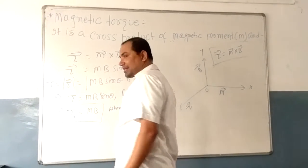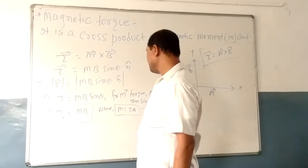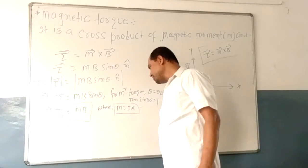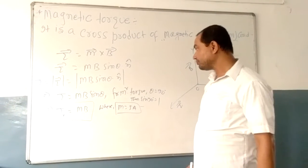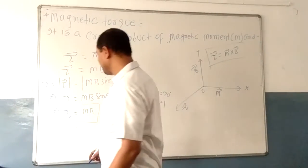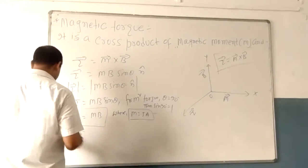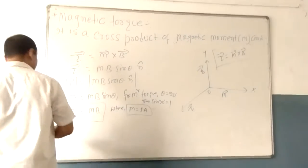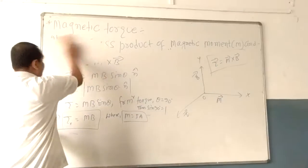Magnetic dipole moment — in the previous video I have taught you it can be equal to current into area. Let us solve some numericals.